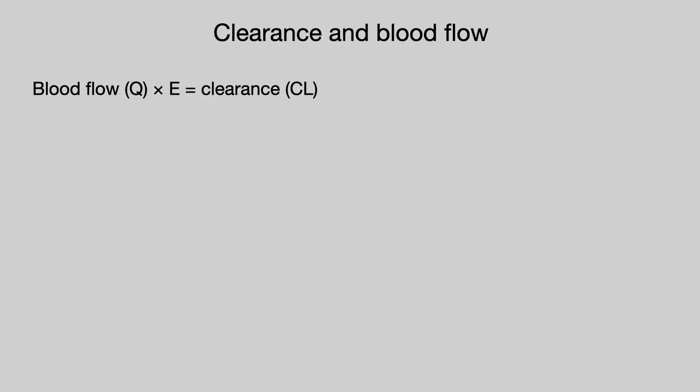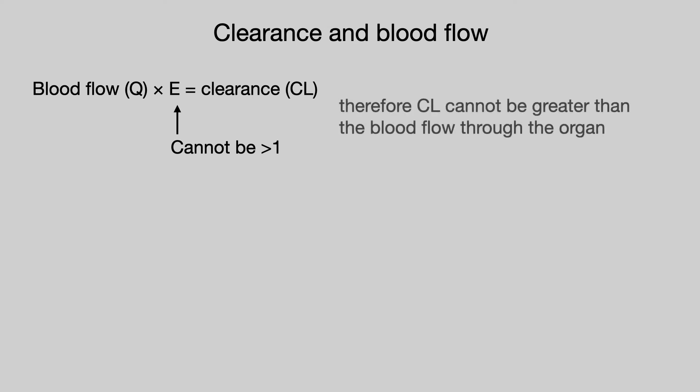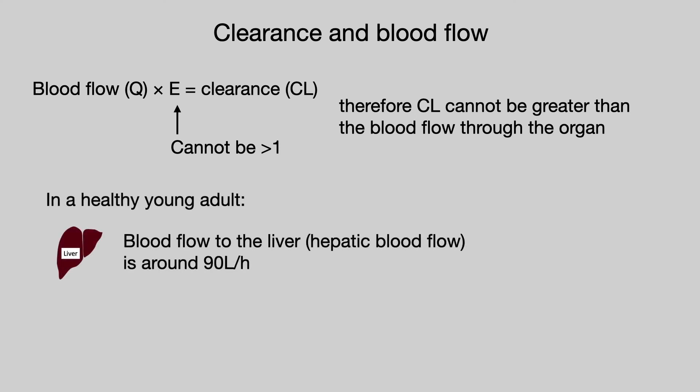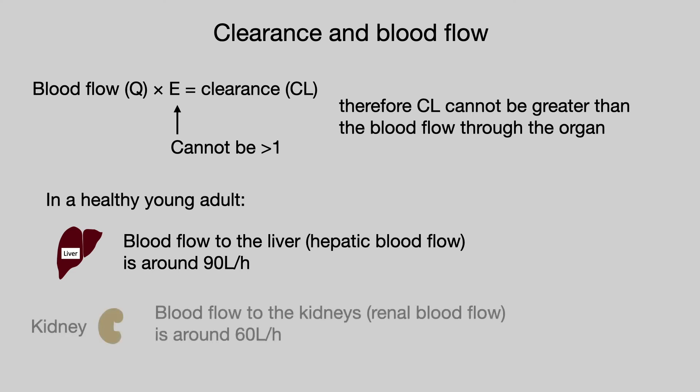Let's consider the relationship between clearance and blood flow. Blood flow multiplied by the extraction ratio equals clearance, but we know that the extraction ratio cannot be greater than one, and therefore clearance cannot be greater than the blood flow through the organ. In a healthy adult, hepatic blood flow is around 90 litres per hour and renal blood flow is around 60 litres per hour, so hepatic clearance is limited to around 90 litres per hour and renal clearance is limited to around 60 litres per hour.